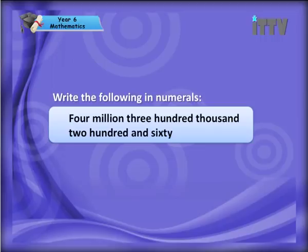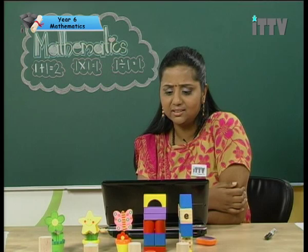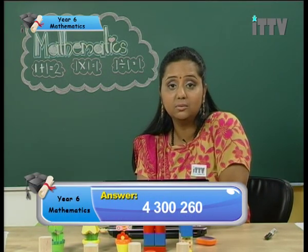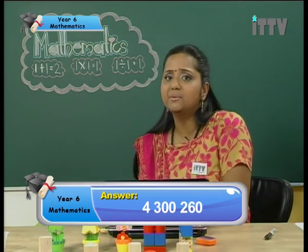Alright, let's do the reverse now — write the following in numerals. Four million three hundred thousand two hundred and sixty. We start with four because it's the four million, then three hundred thousand — so there are two zeros behind the three — followed by two hundred and sixty, so you write two, six, zero. Very good!